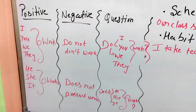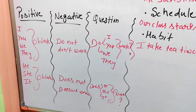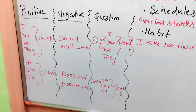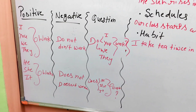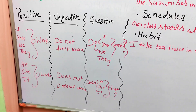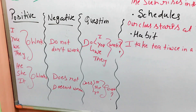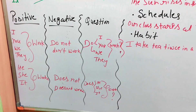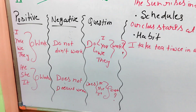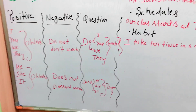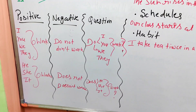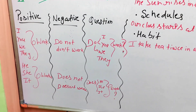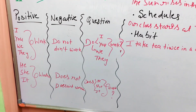Now let's learn how to use it: positive, negative, and question forms. With plural subjects — I, you, we, they — I work, you work, they work. Whenever we need to make a negative sentence: I do not work, they don't work.